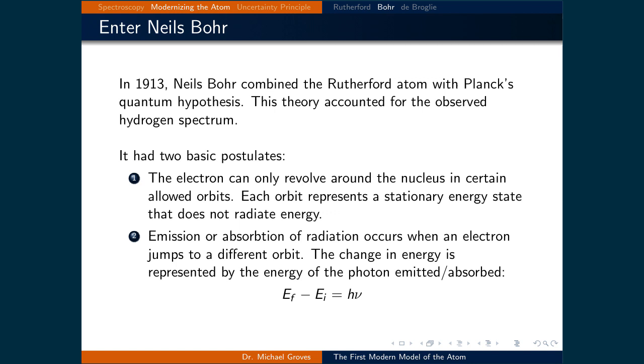It had two basic postulates. The electron can only revolve around the nucleus in certain allowed orbits. Each orbit represents a stationary energy state that does not radiate energy.